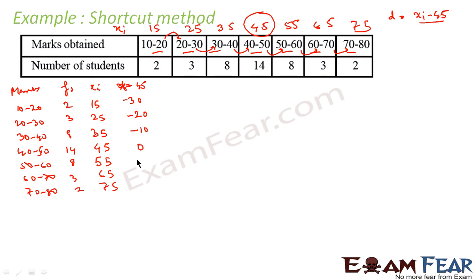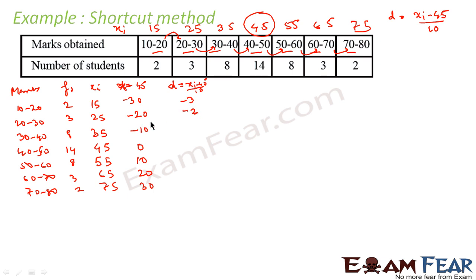Continuing: 55 − 45 = 10, 65 − 45 = 20, 75 − 45 = 30. We can see there is a common factor of 10 in all these values, so h = 10. Now d = (xi − 45) / 10, giving us: −3, −2, −1, 0, 1, 2, 3.